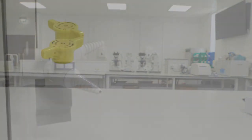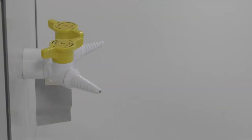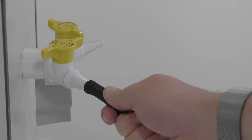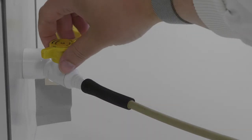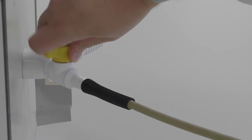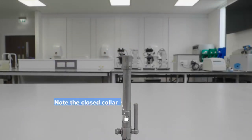So let's get this Bunsen lit. Push the hose firmly onto the gas tap and turn on the flow of gas by lifting the gas tap and turning it counterclockwise. Then use your lighter to ignite the Bunsen.